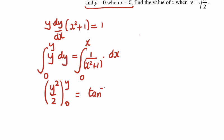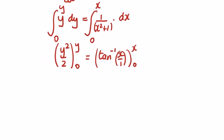This is going to be the inverse tan. The inverse tan, it's 1 plus x squared, a squared plus x squared in the table, so the inverse tan of x over 1 between x and 0. Be careful with the angles that give a value sometimes. So we're going to get y squared over 2 is equal to the inverse tan of x minus the inverse tan of 0, which gives no value.